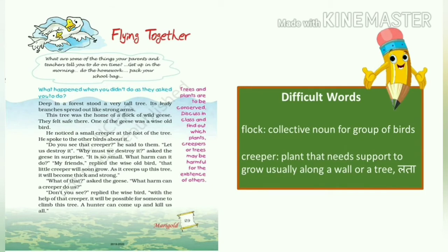Arms यानि कि उसके हाथ हों. This tree was the home of a flock of wild geese. Flock एक collective noun होता है, जिसे हम group of birds को बताने के लिए यूज करते हैं. तो इस tree पर बहुत सारे wild geese रहते थे. They felt safe there — और वो अपने आपको वहाँ पे safe महसूस करते थे.